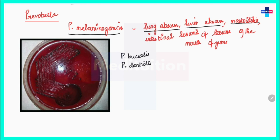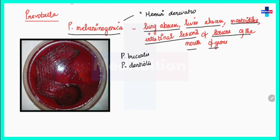Prevotella melaninogenica causes lung abscess, liver abscess, mastoiditis, intestinal lesions, and lesions of the mouth and gums. It is easy to recognize in culture because it produces a pigment — not due to melanin but due to a hemin derivative — giving black or brown-colored colonies, as seen in the picture provided.